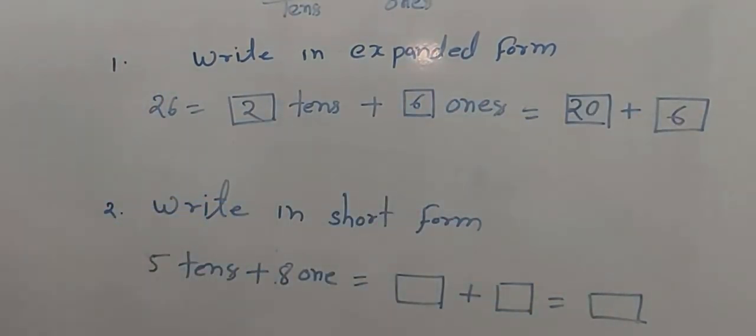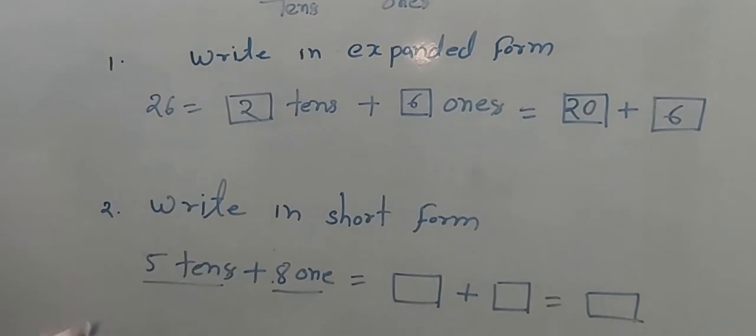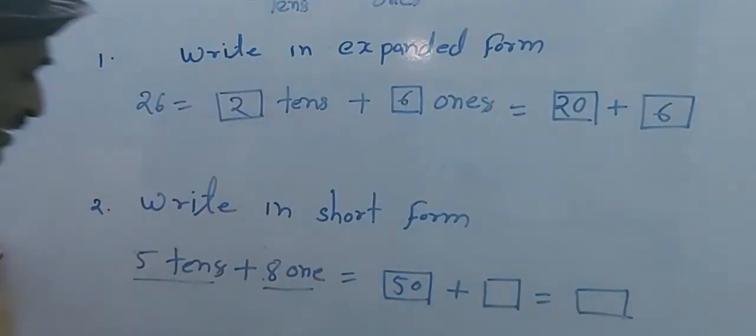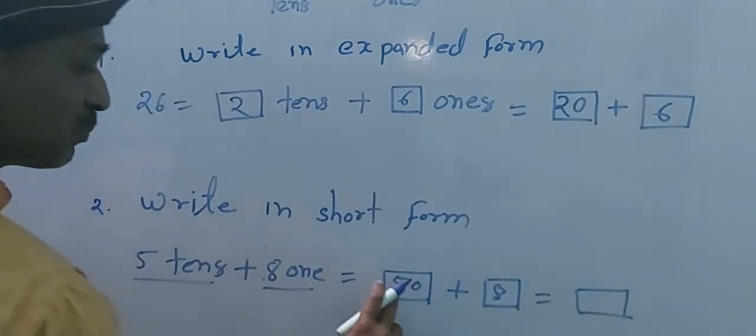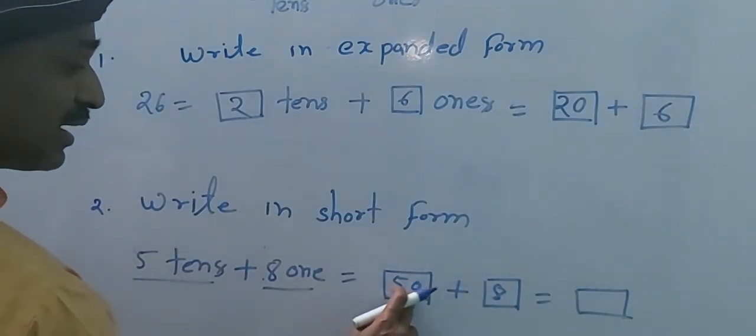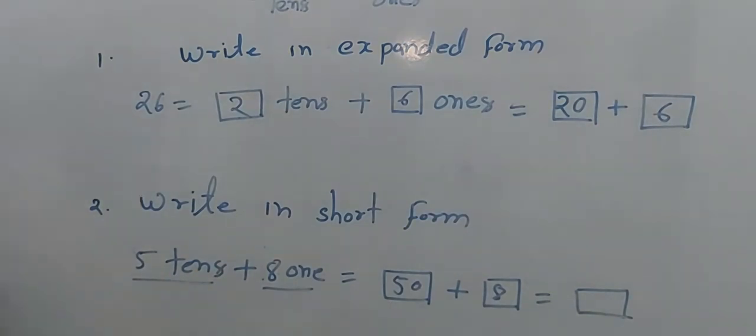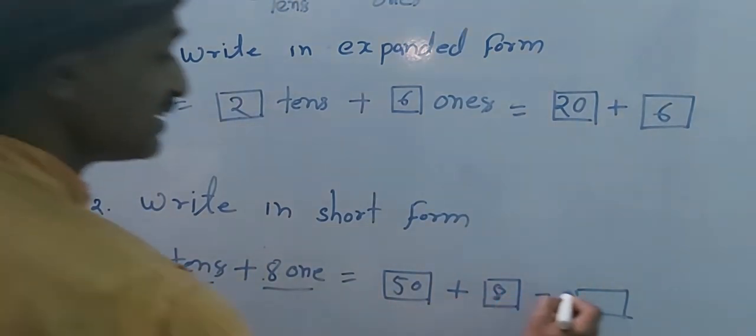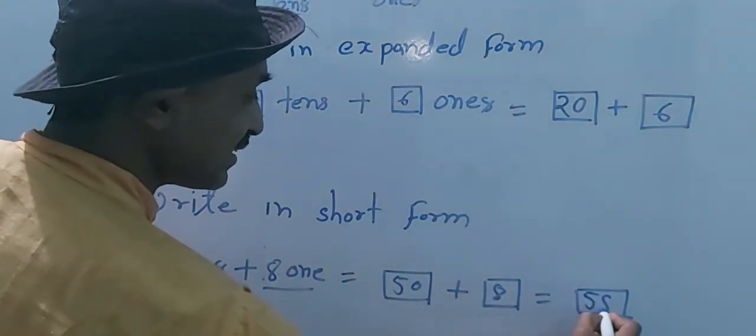Write in short form: 5 tens, 8 ones. 5 tens means 50, and ones 8. 50 and 8, equals 58. Understand?